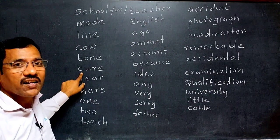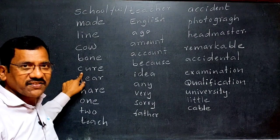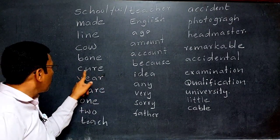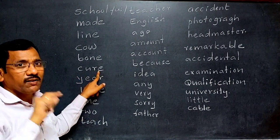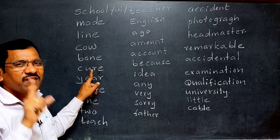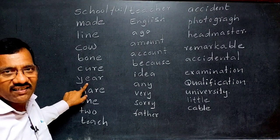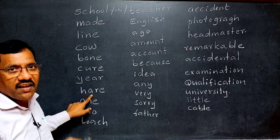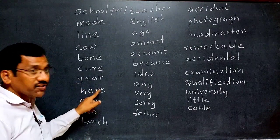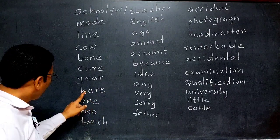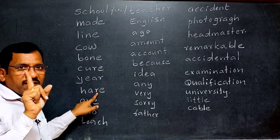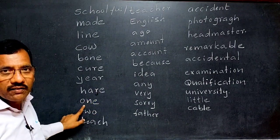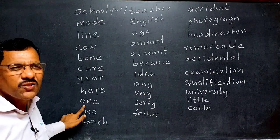The word 'hair' — the 'EA' diphthong is there, one vowel sound, so 'hair' is one syllable. 'One' — there is one strong vowel sound, so it is one syllable. 'Two' — one vowel sound, so it is one syllable. 'Teach' — long E is there, one vowel sound, so 'teach' is one syllable.